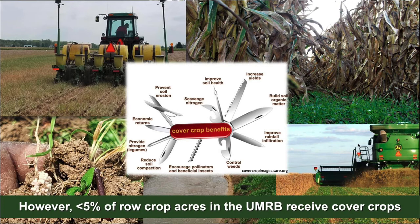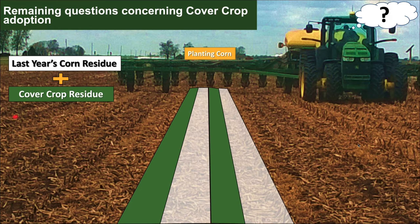Despite all these benefits, less than 5% of row crop agriculture in the upper Mississippi River Basin has used cover crops. So there are some questions remaining that we plan to help farmers visualize answers to with our cover crop analyzer tool.